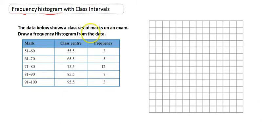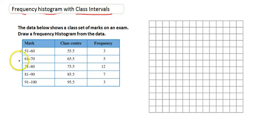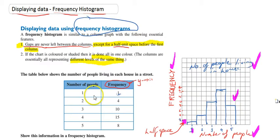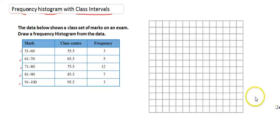The only difference is that this one has class intervals. You can see that it has marks from 51 to 60, 61 to 70, 71 to 80, 81 to 90, and 91 to 100. Whereas our previous example just had x-values of 1, 2, 3, 4, and 5. So we just need to talk quickly about how to put that on our graph.